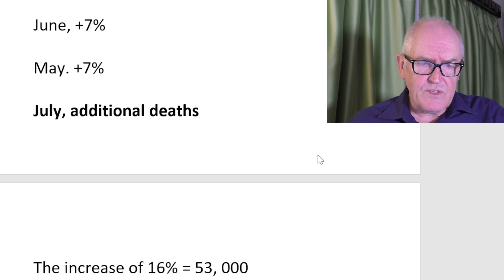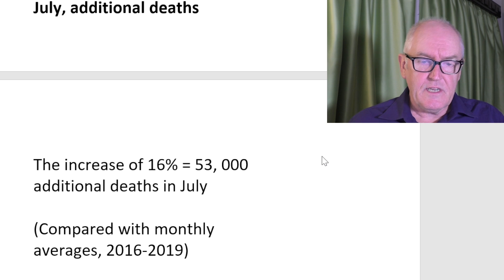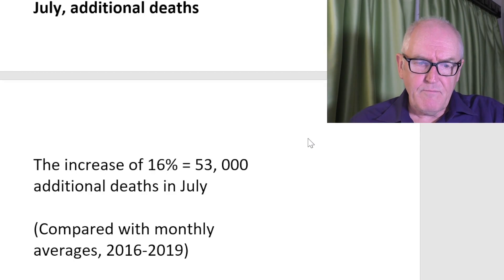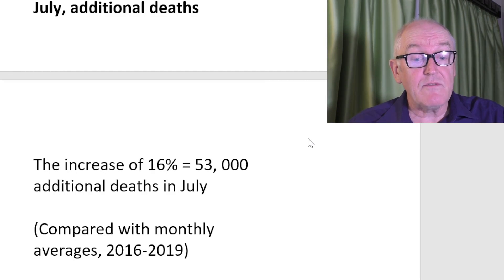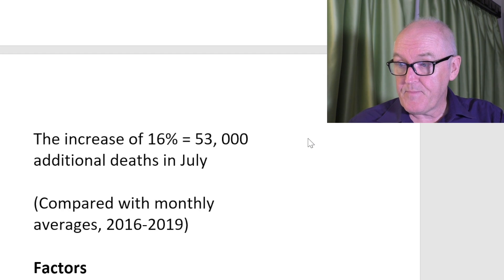This increase of 16% in the European Union equals 53,000 additional deaths just in the month of July — 53,000 more people dying than we would expect. The European data is very good because it's actually compared with pre-pandemic levels between 2016 and 2019. So this is 16% above pre-pandemic levels for non-COVID related deaths. There's something really quite significant going on in the world at the moment.